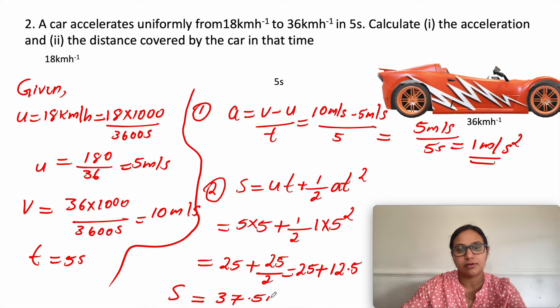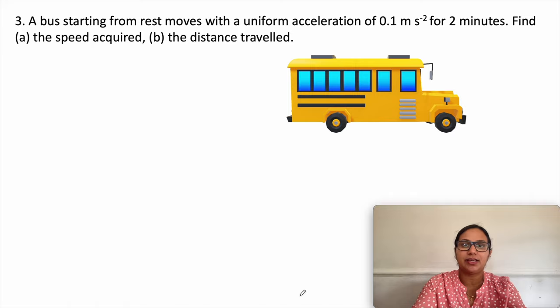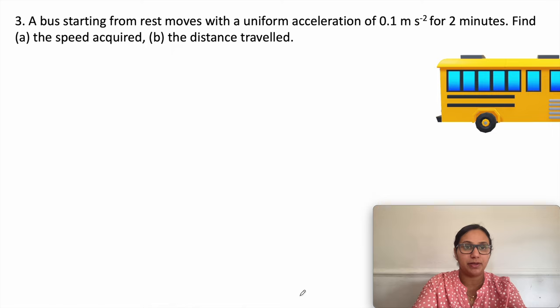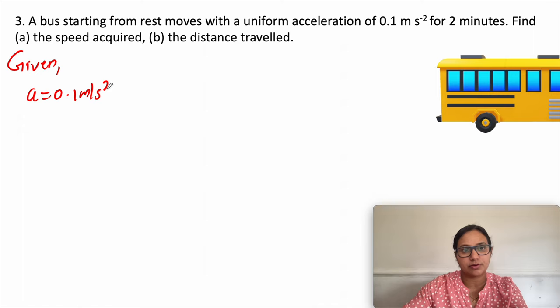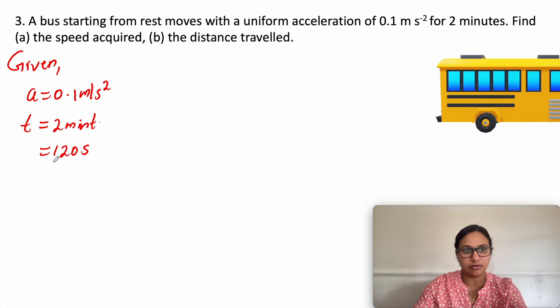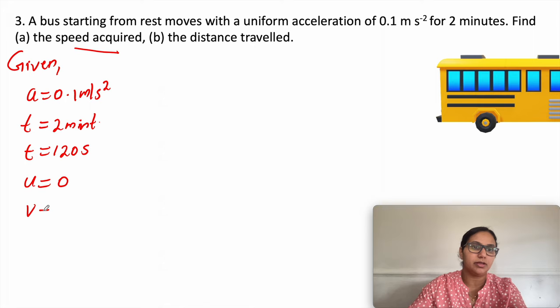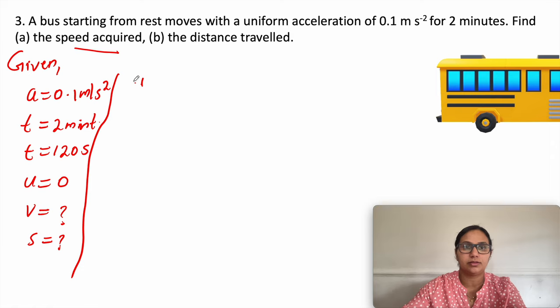Next question: a bus starting from rest moves with a uniform acceleration of 0.1 meter per second square for 2 minutes. Find the speed acquired and the distance traveled. Acceleration a equals 0.1 m/s². Time t is 2 minutes, converting to 120 seconds. Initial velocity is zero since it starts from rest.